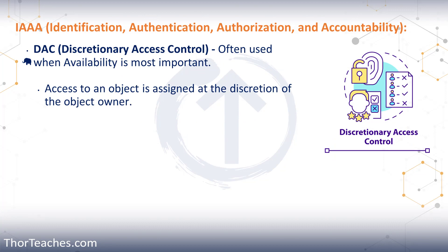Next up, we have DAC, or discretionary access control. That's what you use when you have a Windows or Linux system. As the owner of an object, you can grant certain rights or permissions to others based on your discretion — hence the name. If I have a folder on my computer that I want to share with my team, I can give them certain rights. Maybe my manager needs rights to manage the entire folder — delete and add objects — while the rest of the team only needs read access. I set those permissions: team members get read rights, while my manager gets read, write, and delete.